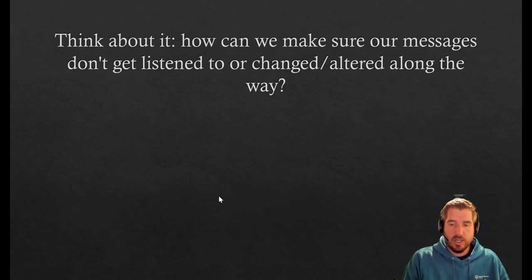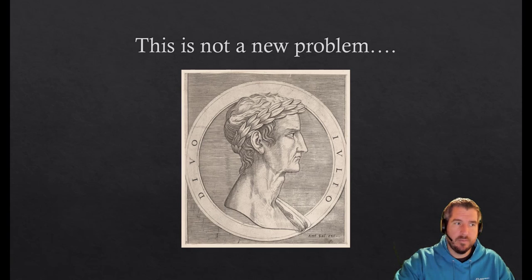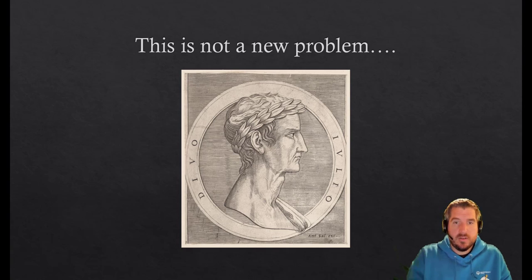Okay, so first off, this is not a new problem at all. This has been around for a long time—this is a picture of Julius Caesar here. Although it wasn't the internet, they wanted to send messages all around the Roman Empire and not have them fall into the wrong hands. They wanted to make sure those messages couldn't be read.